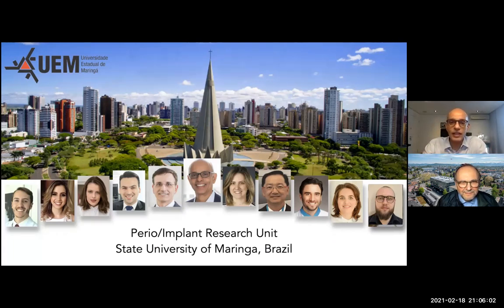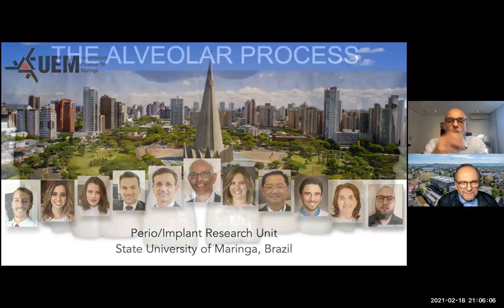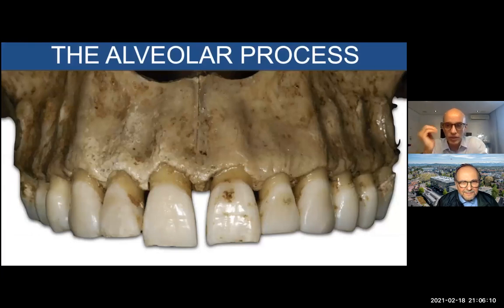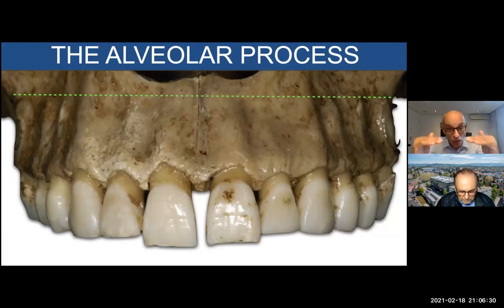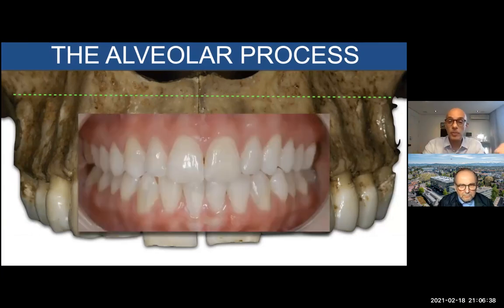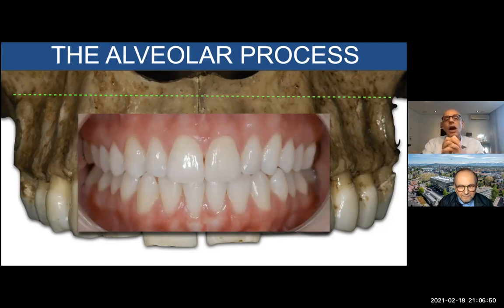Let me introduce to you our main character: the alveolar process that you can see on your screen. The alveolar process is the bone that surrounds the root of a fully erupted tooth. I have drawn a green dotted line to divide the maxilla — below is the alveolar process and above is the basal bone. The alveolar process is very important to support the teeth, but also to support the soft tissues, so its volume has an impact on the framework of teeth and the statics provided by the gingiva.